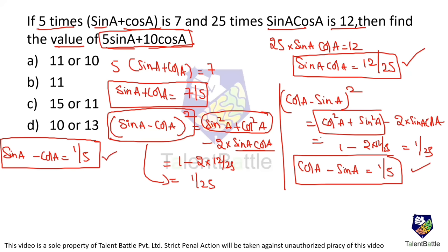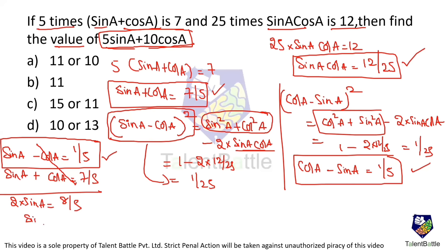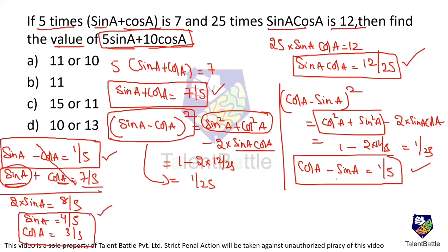Using sin a + cos a = 7/5 and sin a - cos a = 1/5, adding them cancels cos a: 2·sin a = 8/5, so sin a = 4/5. Substituting back: cos a = 7/5 - 4/5 = 3/5. This gives the first case: sin a = 4/5, cos a = 3/5.